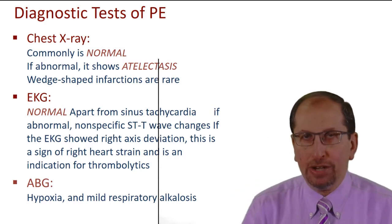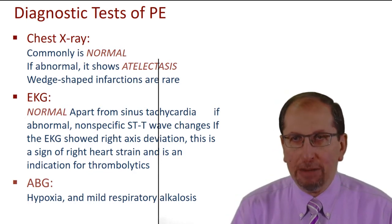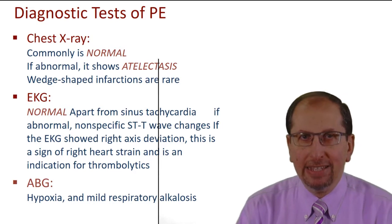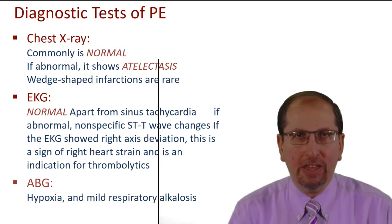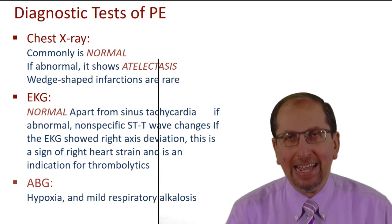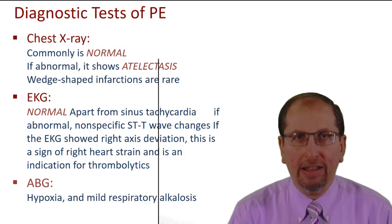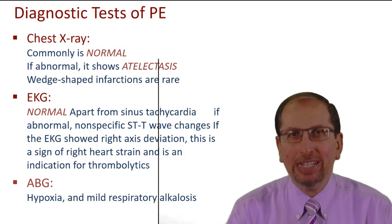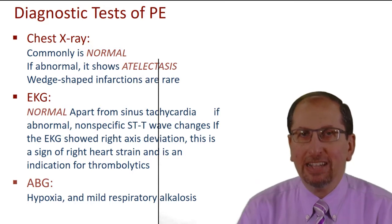Chest X-ray: the most common finding in pulmonary embolism is nothing — it is most of the time normal. If there was an abnormality, it's going to be atelectasis, some areas of collapse in the lung. The classic teaching is you can find a wedge-shaped infarction area, but this is kind of rare now.